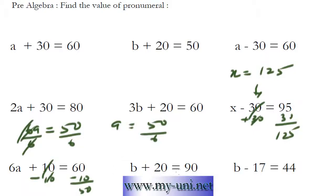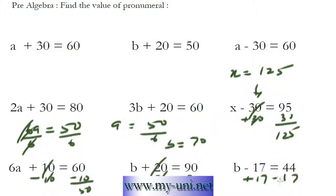B plus 20 is equal to 90. We can subtract 20 from both sides of the equation. These two will cancel out. 90 minus 20 is equal to 70. The value of B is equal to 70. We can add 17 on both sides of the equation. Add 17 here as well. These will cancel out. B is equal to 7 plus 4 is 11. The value of B is equal to 61.